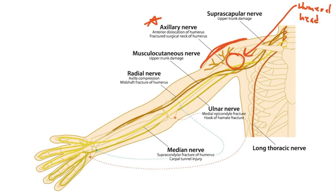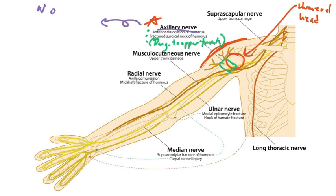There are three injury scenarios you need to remember: anterior dislocation of the humerus; fractured surgical neck of the humerus — the surgical neck is in this region, and you can see the axillary nerve traverse posterior to the surgical neck; and lastly, anything that damages the upper trunk. If the axillary nerve is damaged, the patient will be unable to abduct the arm above 15 degrees.